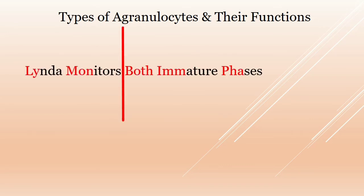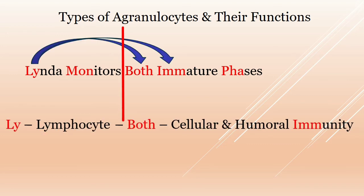Let's now consider the functions of agranulocytes. The key sentence is 'Linda monitors both immature phases.' Here, 'Ly' stands for lymphocyte; 'both' stands for cellular and humoral; 'immature' — I-M-M — stands for immunity. So lymphocytes are involved in cellular and humoral immunity, via T and B lymphocytes.